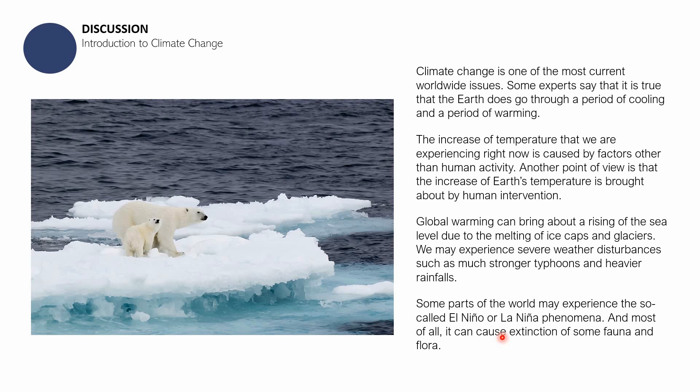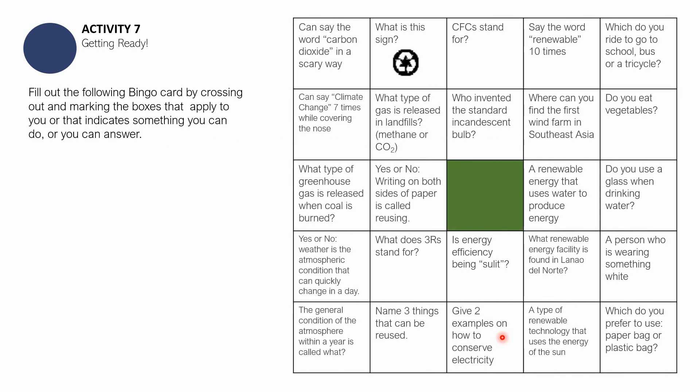That is the introduction to what we are going to discuss in this portion of the module. Let us now proceed with Activity Number 7: Getting Ready. The objective of this activity is to assess your prior knowledge and experience about climate change. What you need to do is fill out a bingo card by crossing out and marking the boxes that apply to you or that indicate something you can do or answer. You can draw the table on your sheets of paper or your science notebook.